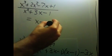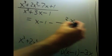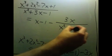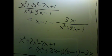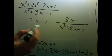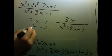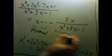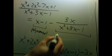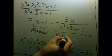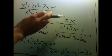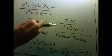So now we know that x cubed plus 2x squared minus 7x plus 1 divided by x squared plus 3x minus 1 equals x minus 1, plus negative 3x over x squared plus 3x minus 1. Now we have just a polynomial plus a rational function where the polynomial on top has lower degree than the one on the bottom.